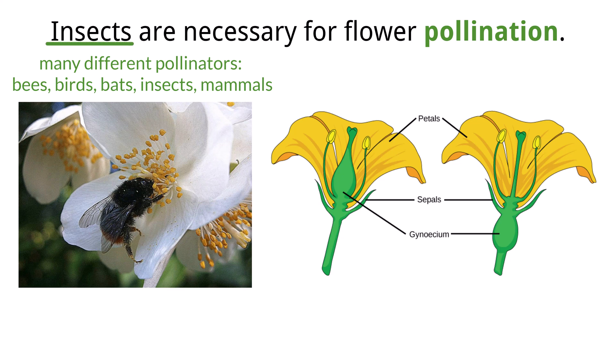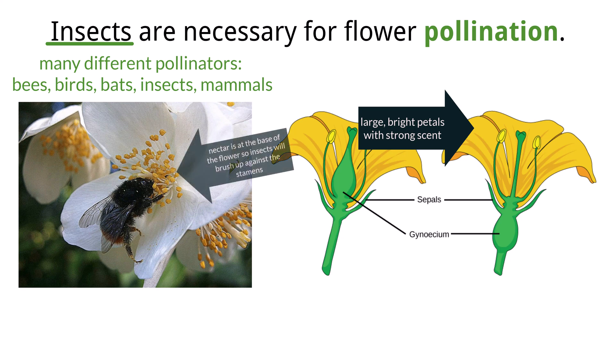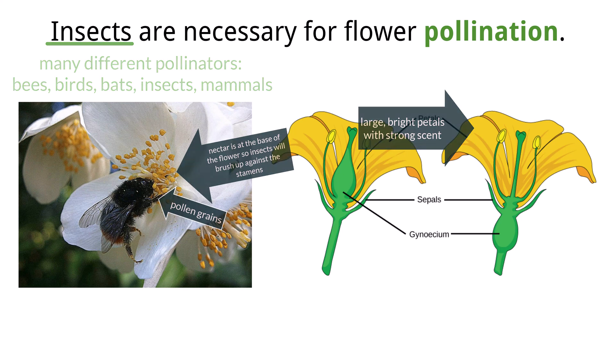Flowers that attract insects usually have petals that are large and brightly colored. There is a strong scent to attract insects to their nectar at the base of the flower. The stamens are deep inside the flower, so that when the insects drink the nectar, they brush against the stamen, picking up pollen. The pollen is sticky and may have spikes to help it stick to the legs of the insect. The stigma is also sticky, which helps hold the pollen.